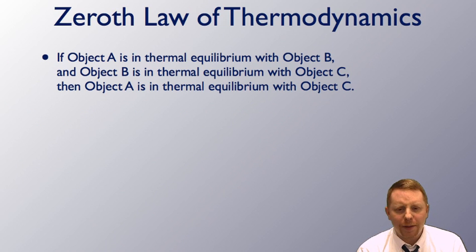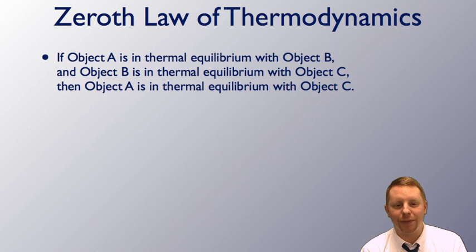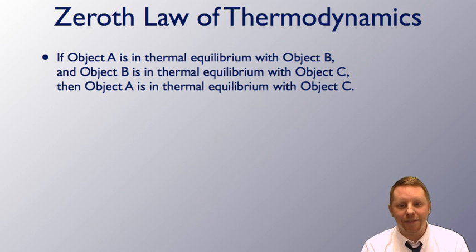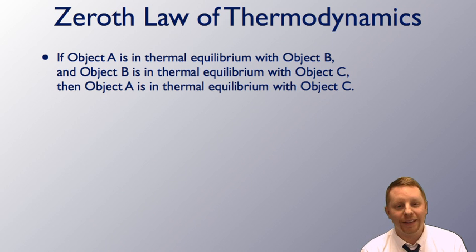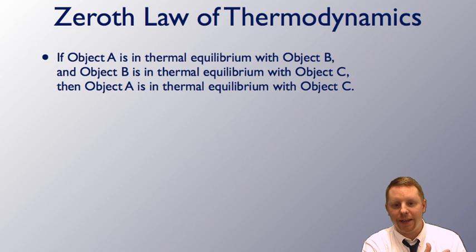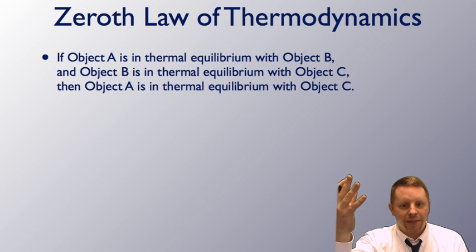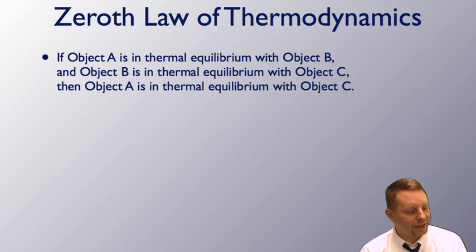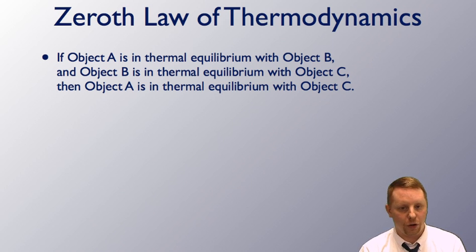Let's start by talking about the zeroth law of thermodynamics. Why is it the zeroth law? They came up with it after they'd come up with the first three laws and decided they needed to have this one first in order for everything else to work out. It's a really simple law: if object A is in thermal equilibrium with object B, and object B is in thermal equilibrium with object C, then object A must be in thermal equilibrium with object C. You need that established in order to allow the other laws to work out.